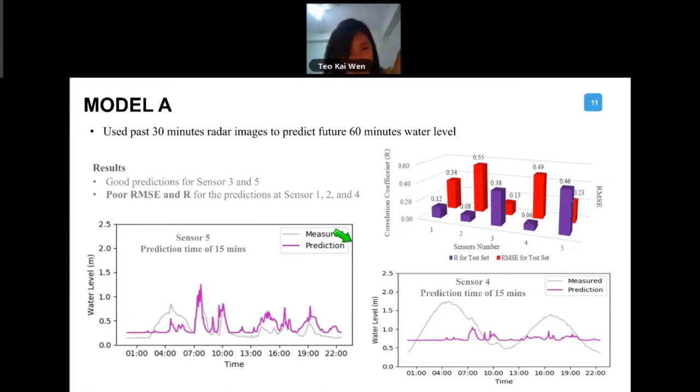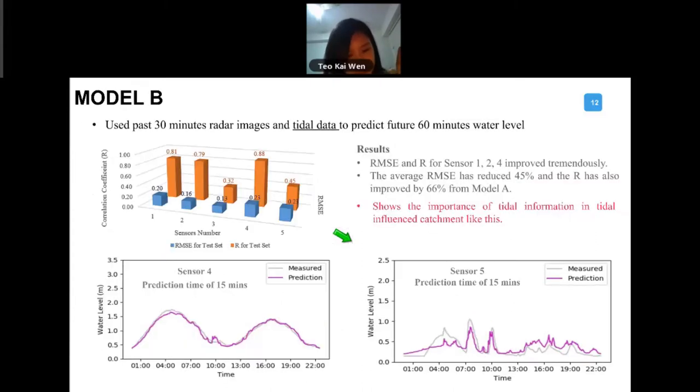Very quickly, just maybe two more slides before we end. We constructed many models, but I just want to show you two of it. The first model is we use past radar images fitted into the deep learning model that we trained, and to predict the future 60 minutes water level. What we can see is that there is actually good prediction for sensor number three and five. But we found that the root mean square error and the R square that we have, the predictions for sensor one, two, and four is actually quite lousy. You can see the comparison right here. Sensor five, good results, but sensor four, not that good. What we found is that actually tidal data plays an important role as well. So we flatten the tidal data together with the radar images to predict the future 60 minutes water level. And once we have done that, we can see that in terms of prediction results, it does give you the sinusoidal tidal pattern as well as giving you good results.